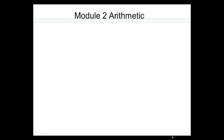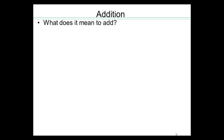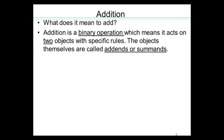We're going to start module 2, which covers arithmetic of all the mathematical objects introduced in module 1, like decimal numbers, complex numbers, polynomials, functions, rational expressions, and radicals. The first operation we're going to start with is addition. Addition is a binary operation, which means that it acts on two objects with specific rules. The objects themselves are called addends or summands.